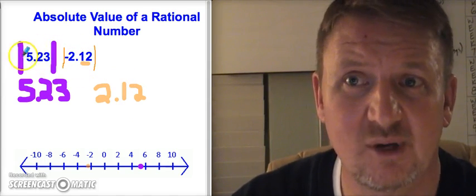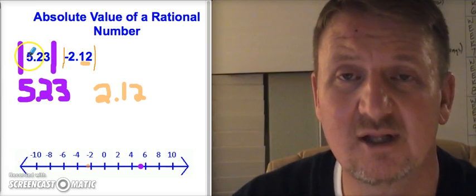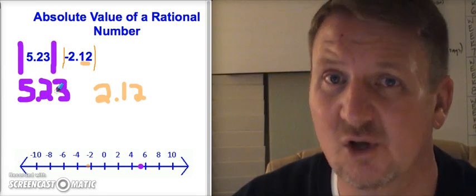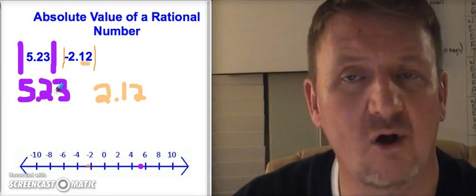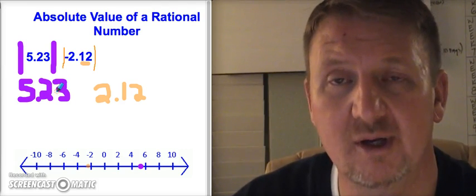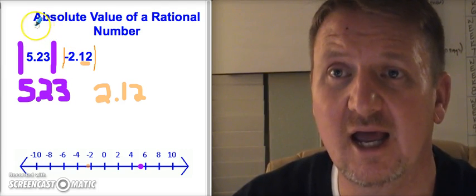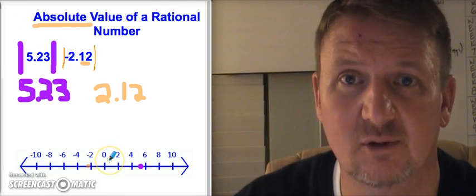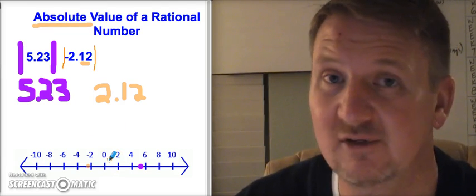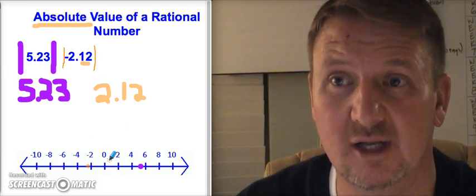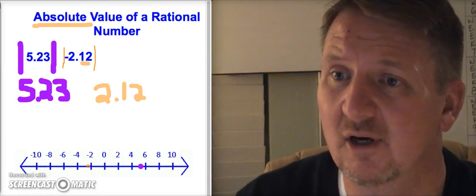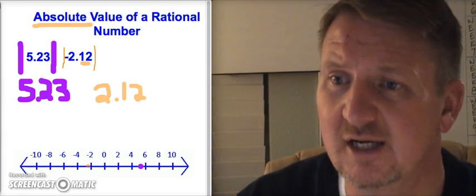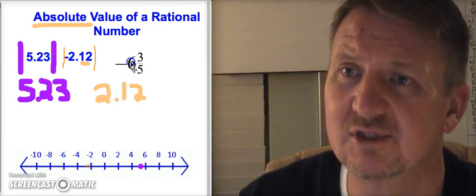If you're finding the absolute value of a negative number, the answer is positive. If you're finding the absolute value of a positive number, the answer is positive. It is always, always, always a positive answer for absolute value. For opposites, you'll have either a positive or negative result.